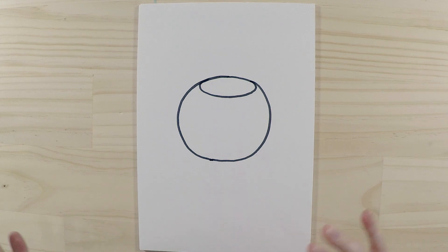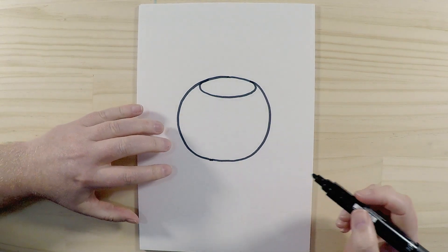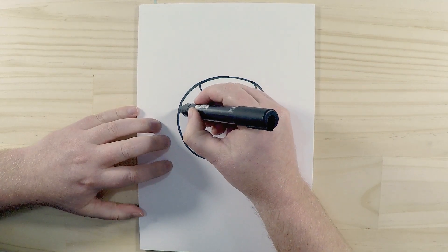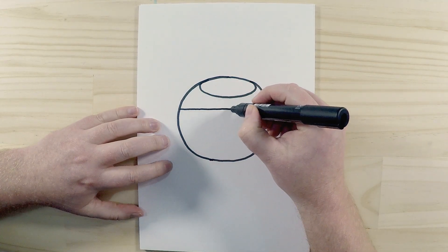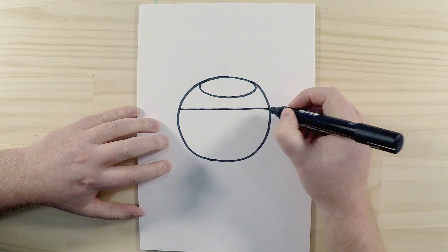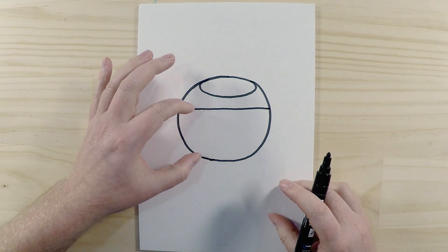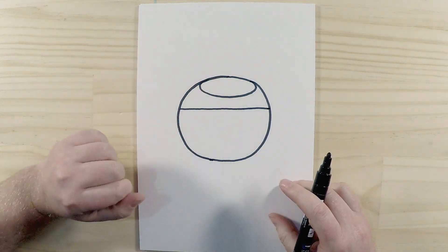Now, of course, fish live in water, so we're going to have to draw some water in there. And what we're going to draw is a line along the top here, just about there. And that shows you how full the bowl is of water, so there's water in the bottom and space at the top there.